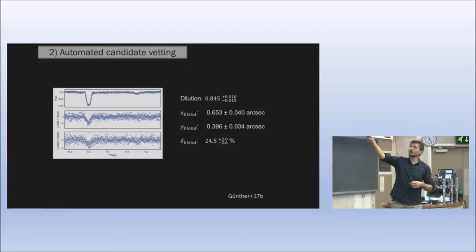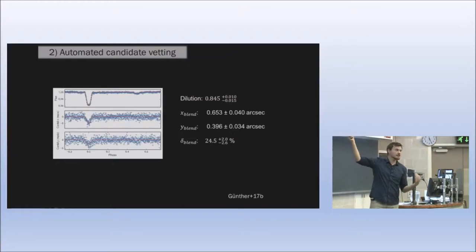I put this all together into a Bayesian modeling framework and run an MCMC analysis, putting all the mathematical constraints and transit models in there. I can actually retrieve from our data what the real dilution of the system is, so how bright is our target that we actually look at, which is a constant star, and how bright or faint is this background eclipsing binary. I can calculate exactly what the location of this blending system is, where it lies in arcsecond separation.